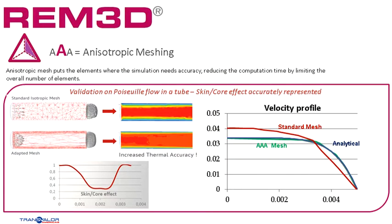Now that we have seen the automatic part of the AAA remeshing, let's focus on the anisotropic part of it. The anisotropic mesh is what makes the balance between accuracy and computation speed so powerful. To put it in a simple way, when velocity gradients occur, they have a particular direction. If the mesh can be very fine in this particular direction, then we will make sure we capture the physical phenomenon accordingly.